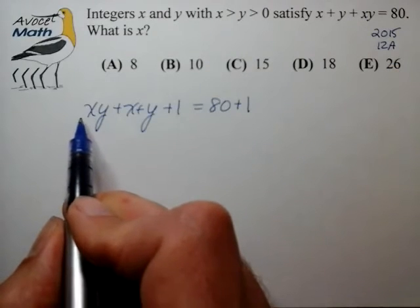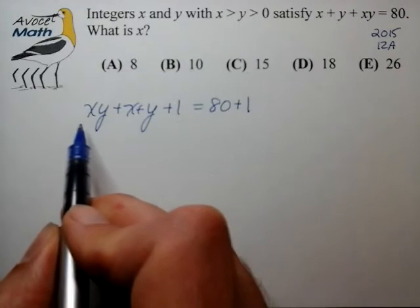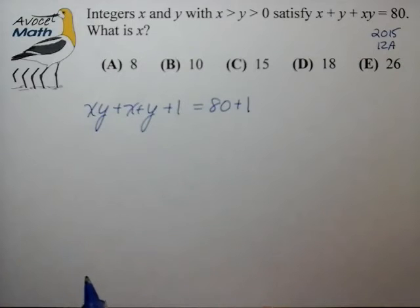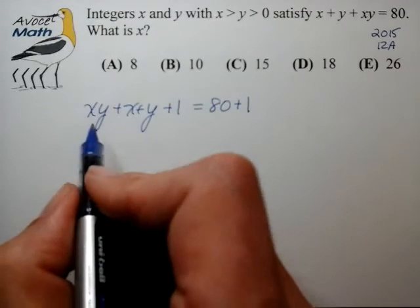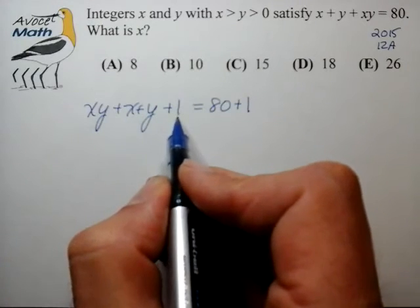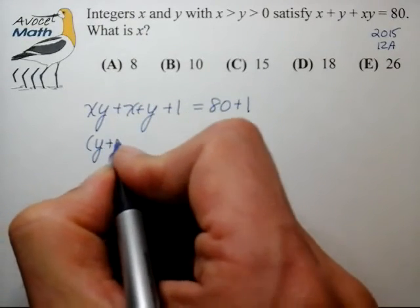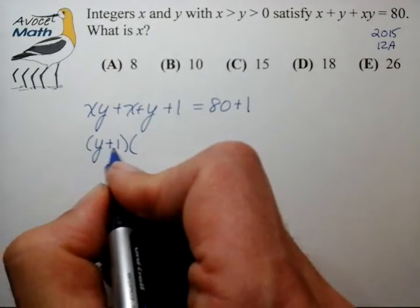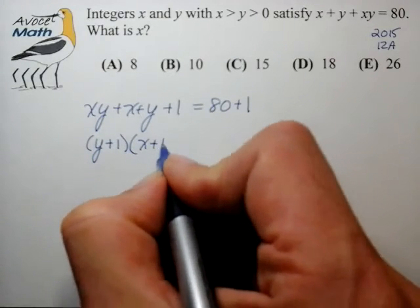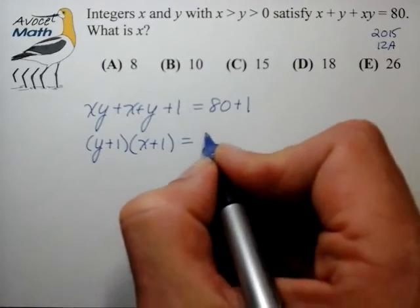And what that does is it now gives us a group of terms on the left hand side which is now factorable. And that's basically the key to solving these types of problems. So let's go ahead and factor this group of terms. We have that factor form being y plus 1 times x plus 1, now equaling 81.